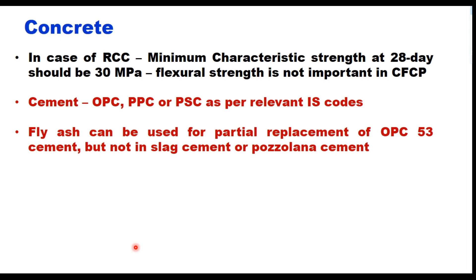Cement can be of any type — ordinary Portland cement, pozzolana cement, or slag cement as per the relevant IS code. If using OPC 53, you can partially replace cement with fly ash. However, fly ash should not be used if PPC or PSC is being used, because fly ash or slag is already present in those cements.